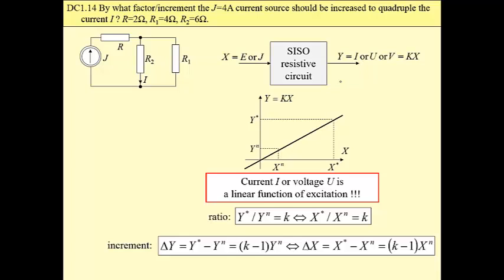Then, if we have a ratio of output, in our case current, y star is a value in non-nominal condition, y superscript n is in nominal condition. If this ratio is k, then a ratio of excitation should be k as well, and we may calculate increment of excitation as shown here below.